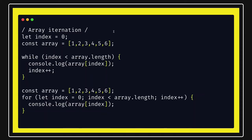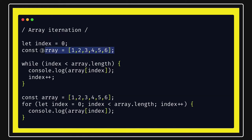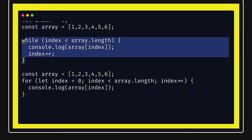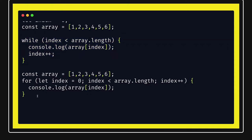Hi everyone, welcome back. In this video we are going to talk about arrays — how we can iterate on arrays using different methods. In array.prototype there are many methods like forEach, filter, map, reduce, some, every, and more. For basic iteration, you can run a simple while loop with an index till the length, or a classical for loop: for i = 0, i < length, i++.